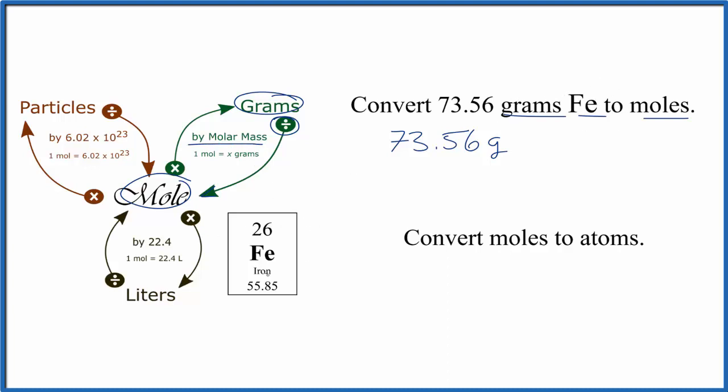We go to the periodic table, iron, 55.85, and the units, grams per mole. So we're dividing, and when we do that, the grams cancel out. We end up with 1.32 moles of iron.